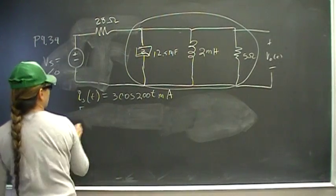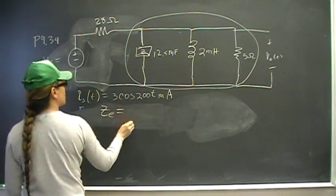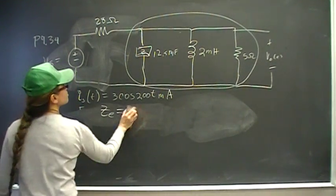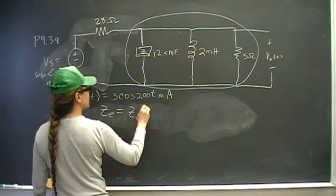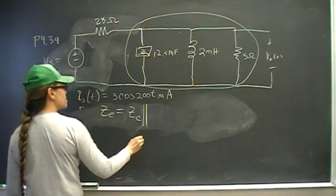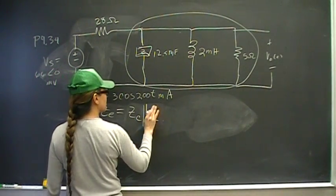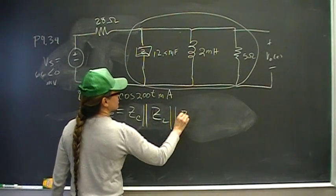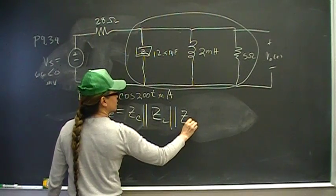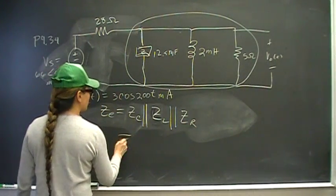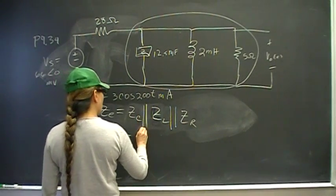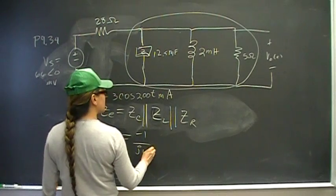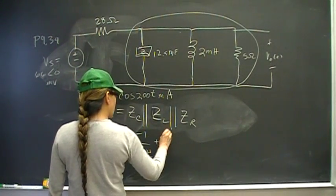Let's do that. The equivalent Z_equivalent is going to be 12.5, or the capacitor impedance in parallel with the inductor impedance in parallel with the resistor impedance.